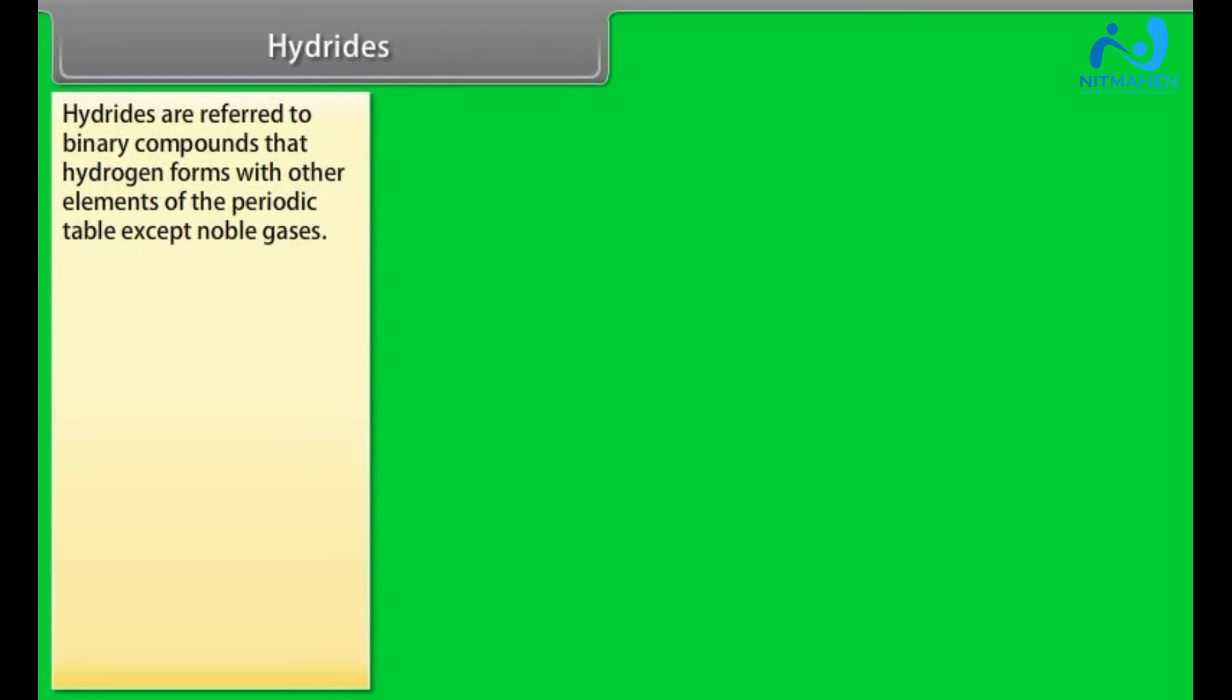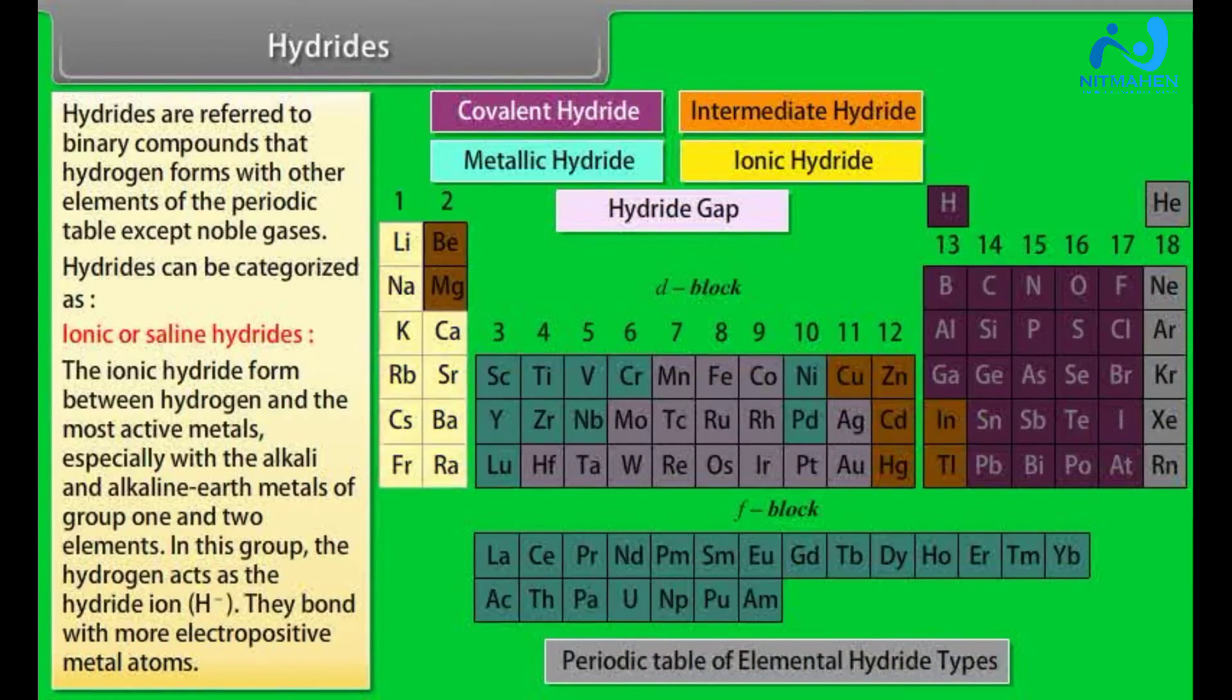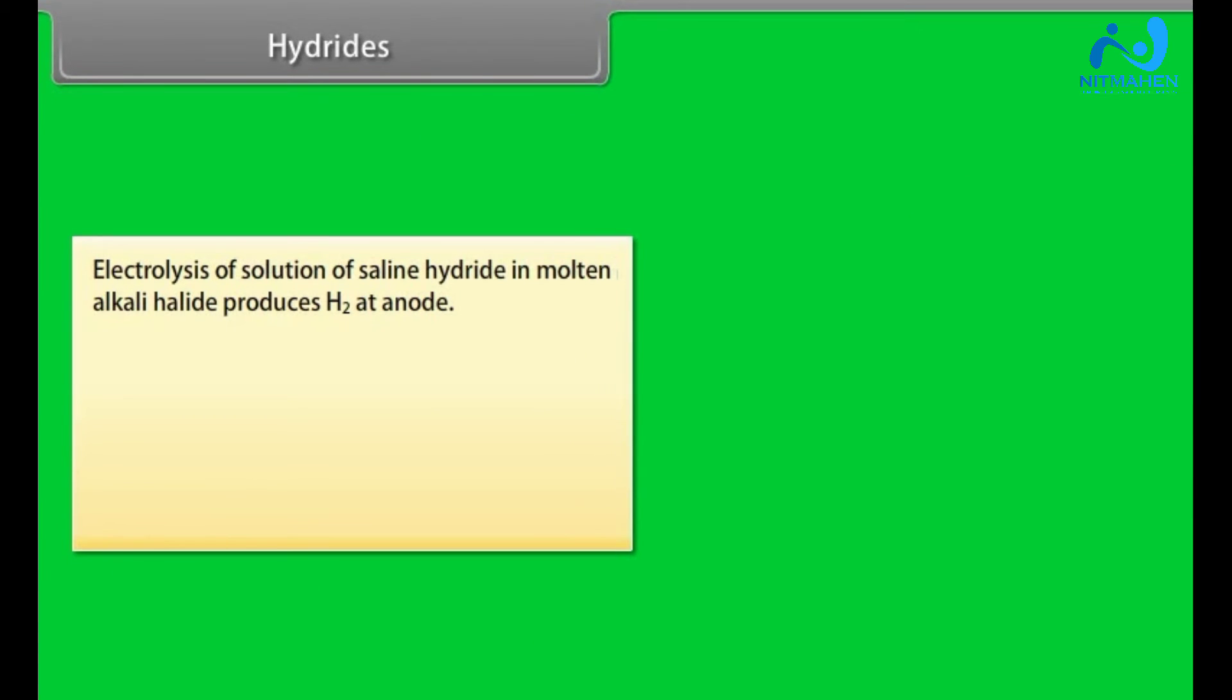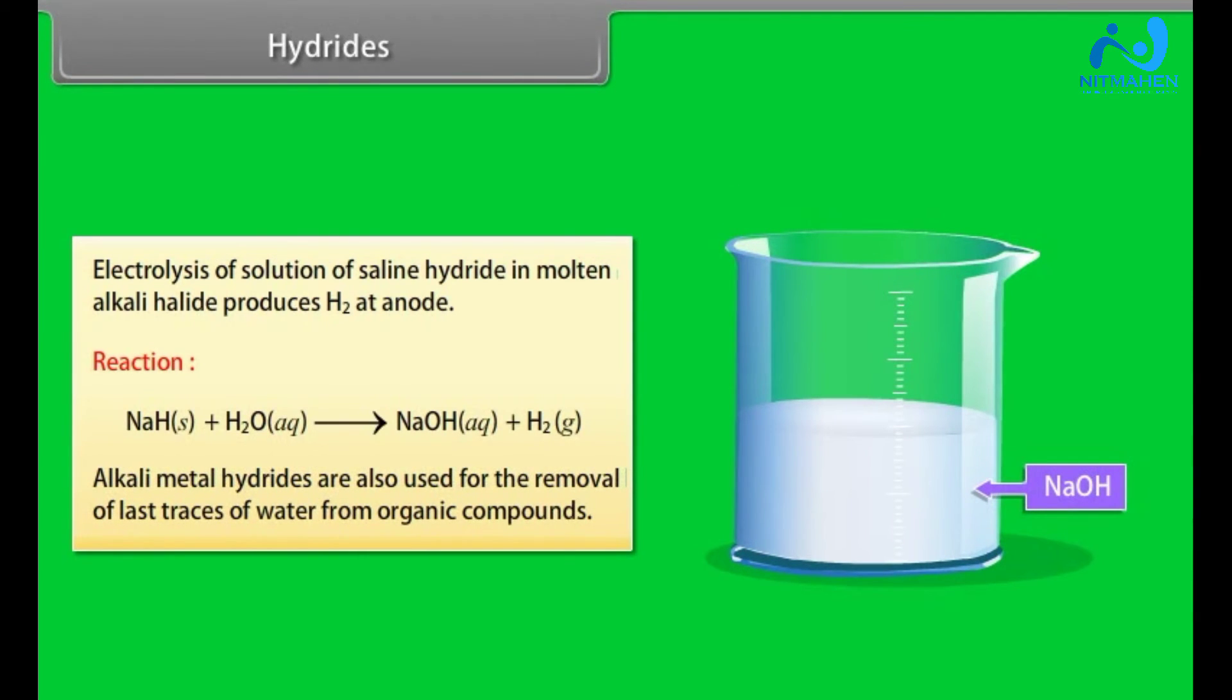Hydrides. Hydrides are referred to binary compounds that hydrogen forms with other elements of the periodic table except noble gases. Hydrides can be categorized as: Ionic or saline hydrides. The ionic hydride form between hydrogen and the most active metals, especially with the alkali and alkaline earth metals of group 1 and 2 elements. In this group, the hydrogen acts as the hydride ion. They bond with more electropositive metal atoms. Electrolysis of solution of saline hydride in molten alkali halide produces H2 at anode. Alkali metal hydrides are also used for the removal of last traces of water from organic compounds.